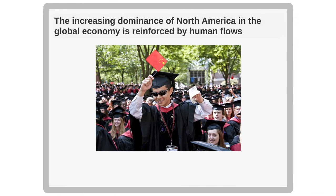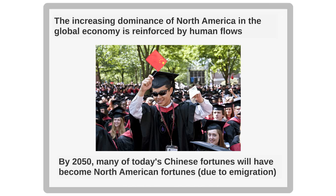The increasing dominance of North America in the global economy is being reinforced by human flows. Consider the internet meme of a Chinese PRC graduate at Harvard Business School, getting his MBA, waving the Chinese flag and the all-powerful American dollar. People like this are likely to become multimillionaires, but the question is: will they become Chinese multimillionaires, or will they, in reality, become American multimillionaires who happen to have assets in China? By 2050, many of today's Chinese fortunes will have become North American fortunes, largely due to emigration — in the same way that Russian fortunes have become British fortunes, as Russian oligarchs have sought refuge in the United Kingdom. The first generation may remain Russian or Chinese, but their children are going to be British or American.